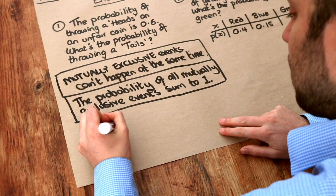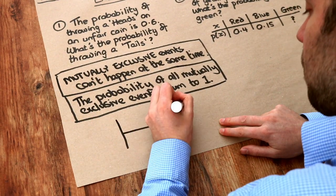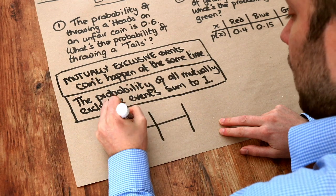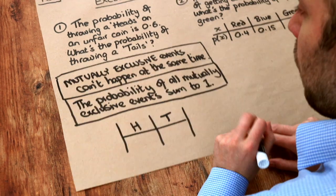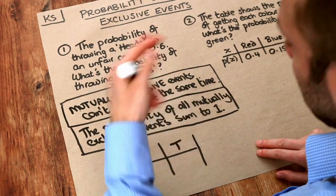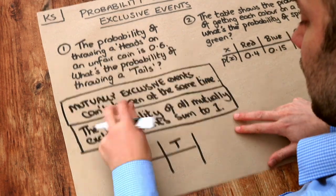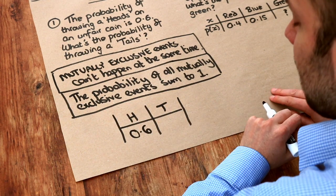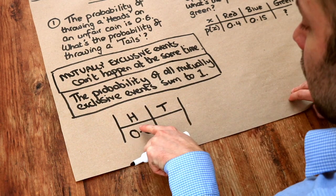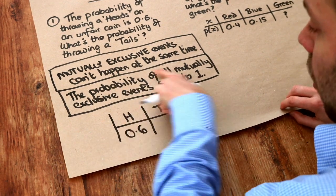So if we were to do a little table and we were to put H for heads and T for tails. Now we're told that the probability of getting heads, because it's not a fair coin, is 0.6. So what is the probability of getting tails?